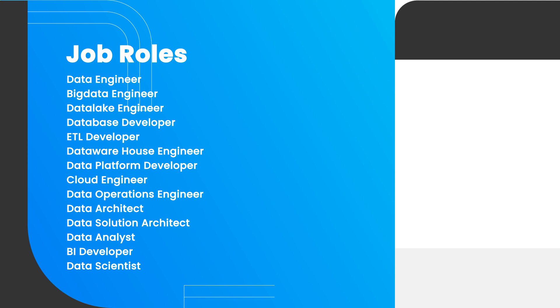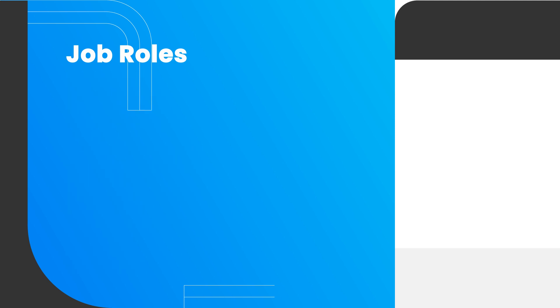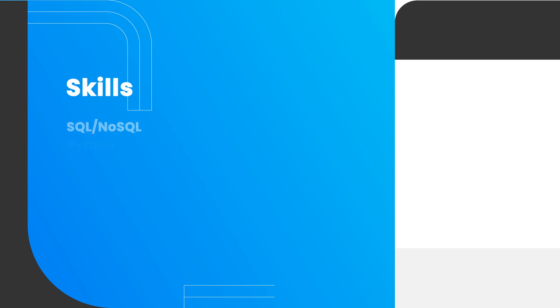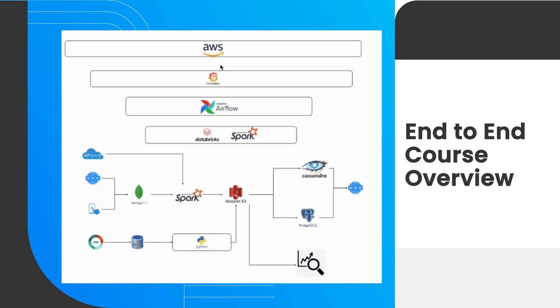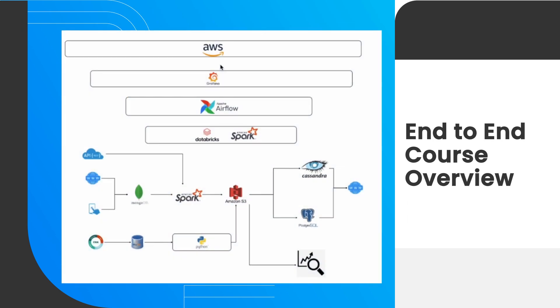The must-have skills to become a data engineer are: SQL and NoSQL, Python, data warehousing, cloud platforms (AWS, Azure, or GCP), big data frameworks like Hadoop and Spark, and at least one pipeline management tool such as Apache Airflow. All these are essential skills required to become a data engineer.